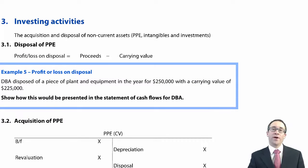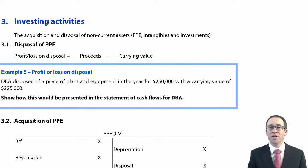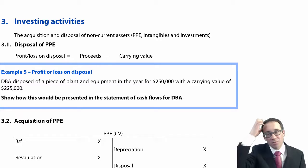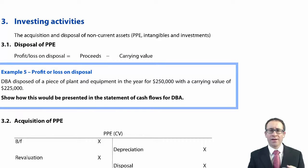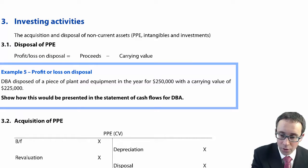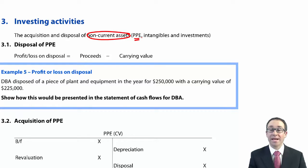Following on from our operating activities, we're going to look at our investing activities, which at this level is buying PPE, selling PPE, and also interest or dividends received from investments. In the real world, cash flows to do with investing activities relate to anything concerning your non-current assets. At this level, it's PPE, but you could buy and sell intangibles or investments. The focus is on property, plant and equipment.